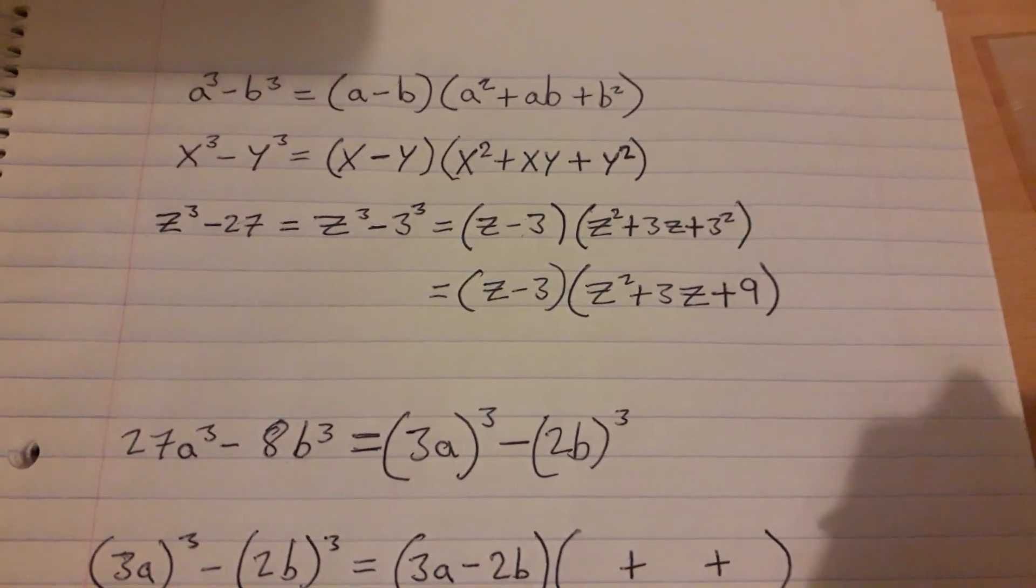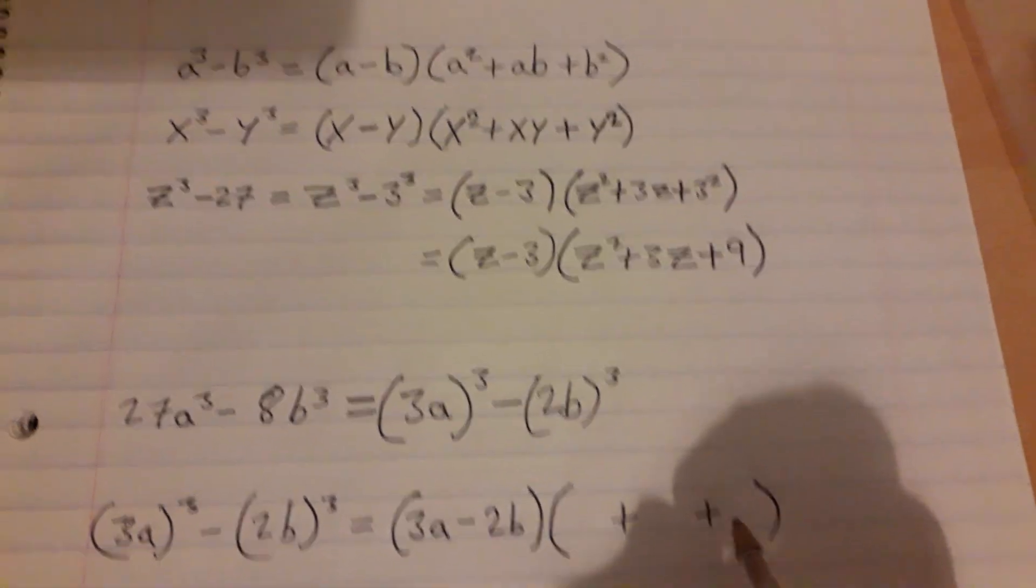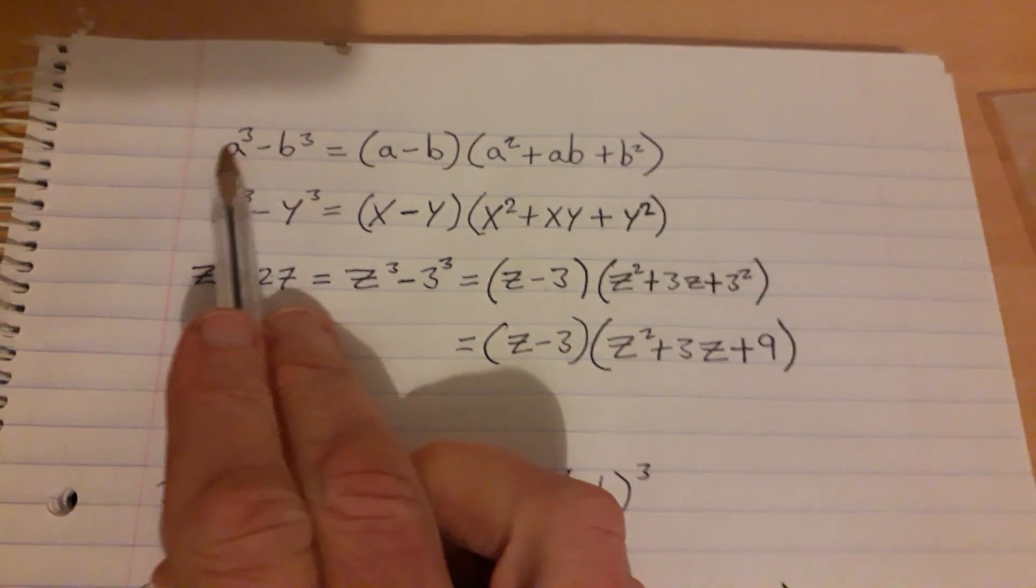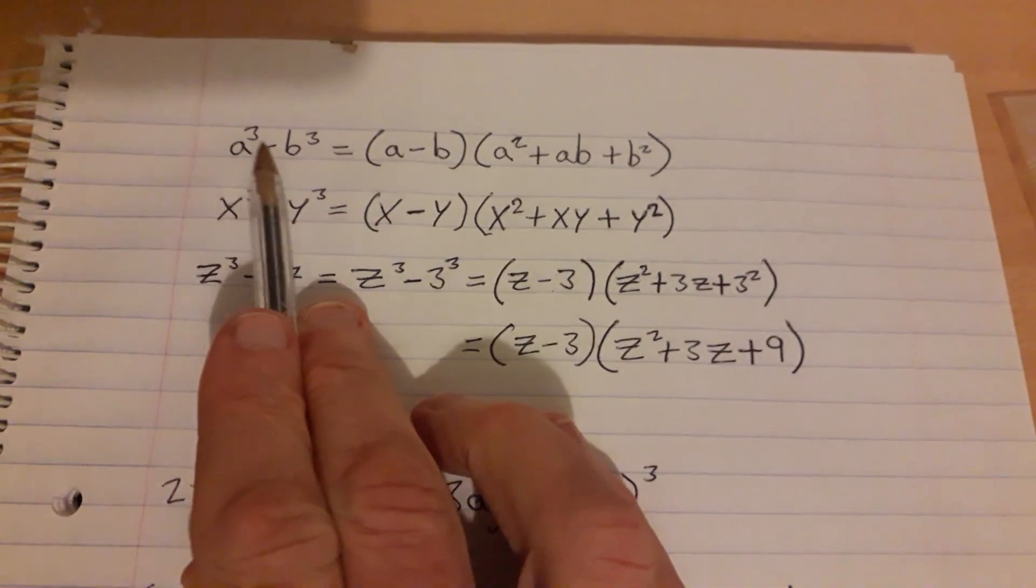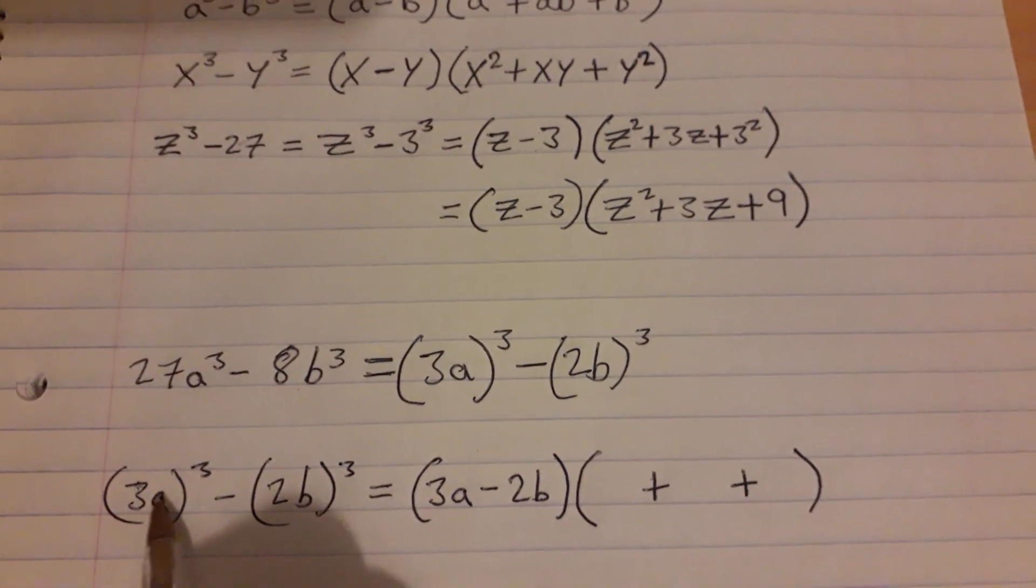And then we just need the three parts then that go in here. So according to up here, the first part is going to be whatever first part of this is but to be squared instead of cubed. So over here the first part is 3a, and it's all of that to be squared.